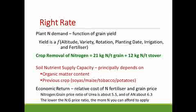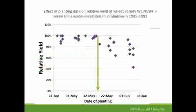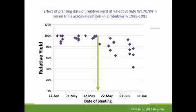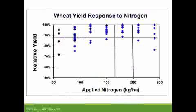Your yield potential will largely determine how much nitrogen you apply. This figure shows the effect of planting date on the relative yield of wheat in Zimbabwe. When you plant from late April up to mid-May, you generally get very high yields. When you plant after mid-May, the chances of lower yields increase significantly. So when planting early, you can afford more nitrogen because of a higher yield expectation. When planting late, you need to consider reducing your nitrogen somewhat because your yield potential is decreased.